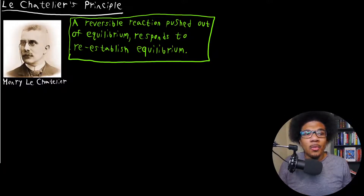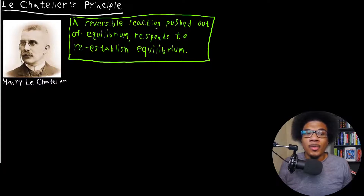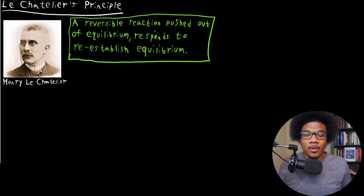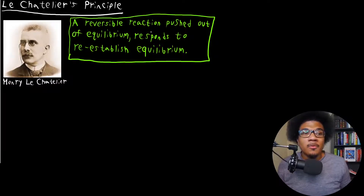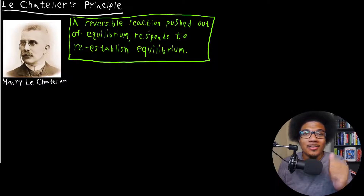What the principle essentially says is that a reversible reaction, when pushed out of equilibrium, will respond to reestablish its equilibrium. Basically, chemical reactions want to be at equilibrium — at that stable point where the concentrations of reactants or products are no longer changing. And if you do anything to push it away from that point, it will fight to reestablish that equilibrium.